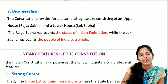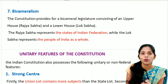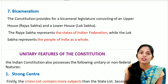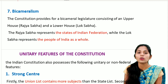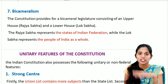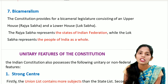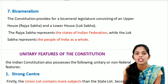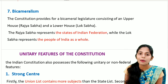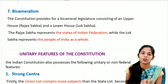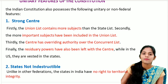The seventh federal feature is bicameralism - we have two houses: the upper house (Rajya Sabha, also called the Council of States, representing state interests) and the lower house (Lok Sabha, also called the House of the People). Bicameralism is an important feature of the federal characteristic.